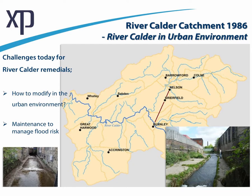Looking at the River Calder today, the challenges are the post-industrialized river and modifications to the physical habitat in the urban environment — retaining walls, weirs, and culverts. These are among the main challenges we face today, along with maintaining these man-made channels and drainage systems and the CSO to manage flooding risk. The area includes protecting major transport links — road, rail, and the Leeds-Liverpool Canal — which restricts in-river and marginal habitat work, effectively channeling everything through man-made flumes.